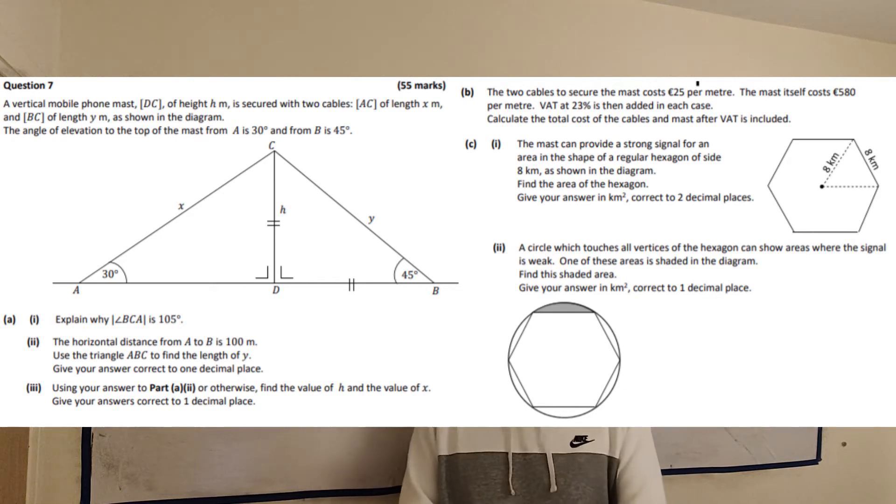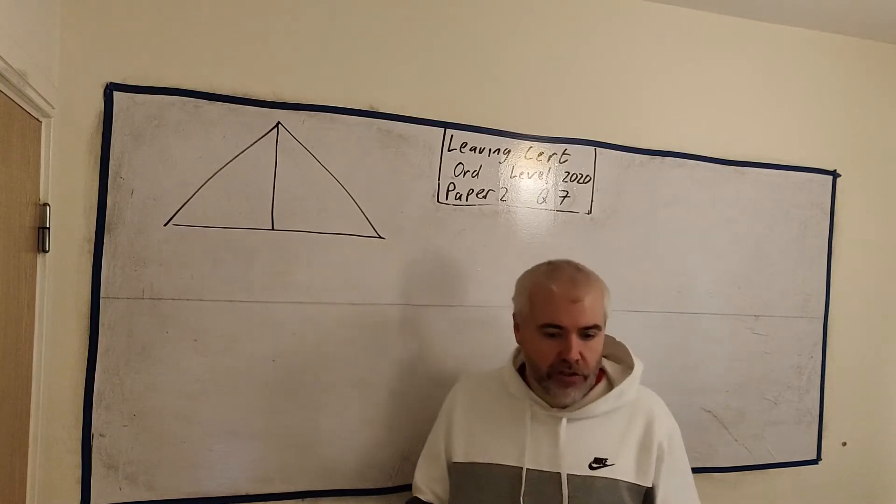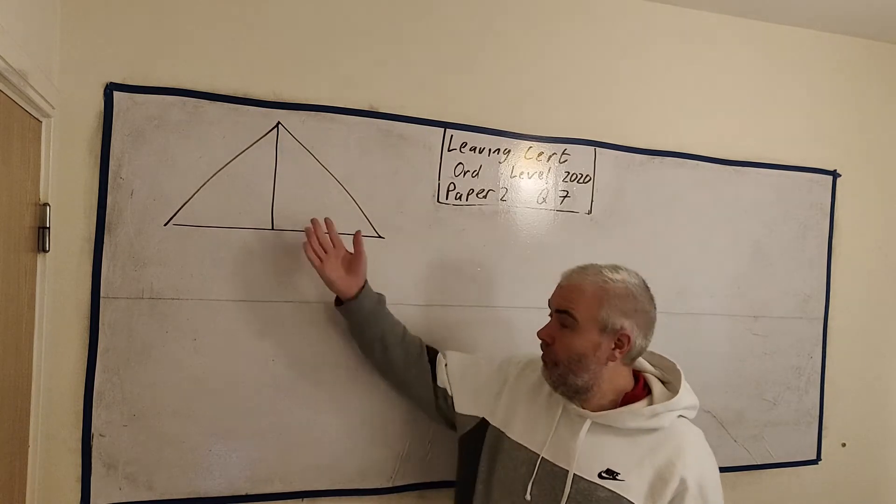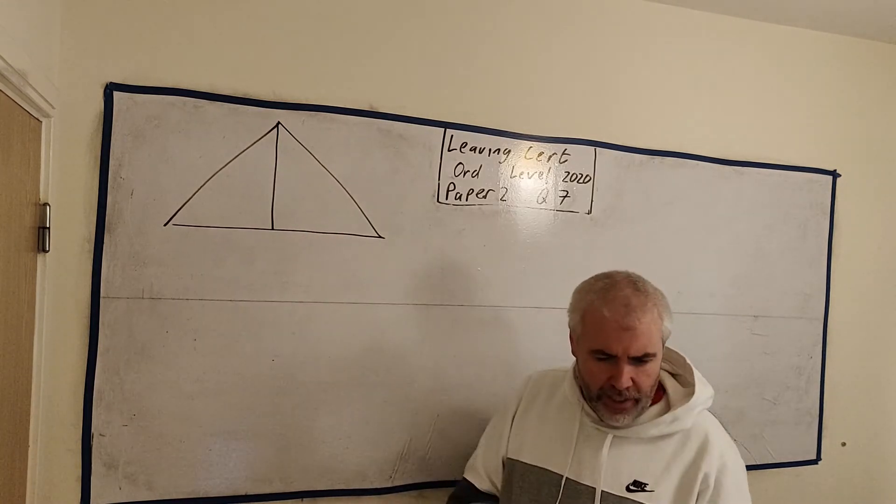Hello, this is question 7 from paper 2 from the 2020 Ordinary Level Maths exam. Up the top right of the screen you'll find a playlist that'll bring you to all my solutions to the questions in this paper. This is the first large question in the paper and it all revolves around two shapes, one storyline.